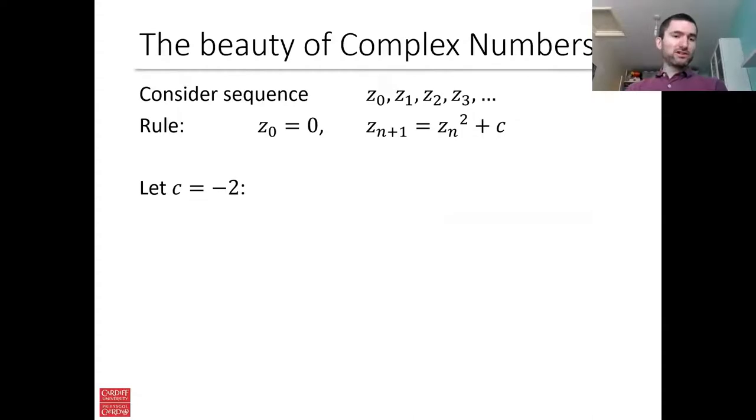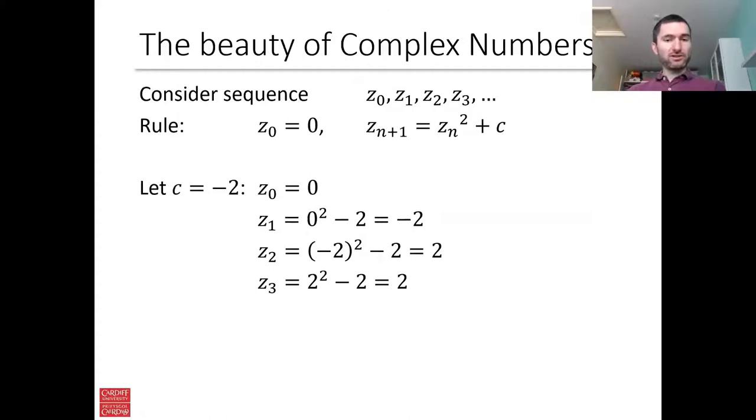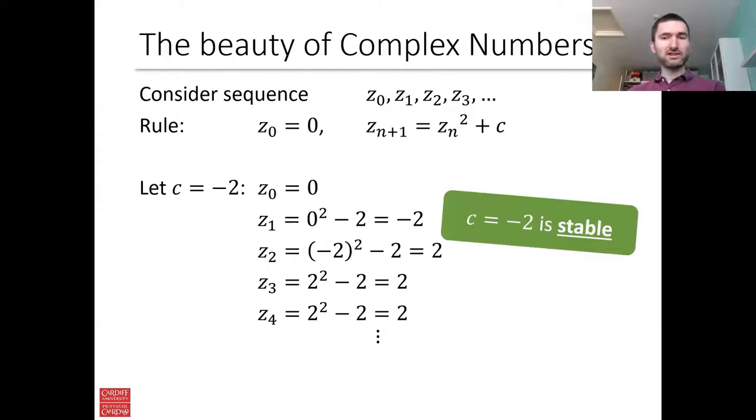We could consider for instance something like c is minus 2. So what happens then? Well again we start with z0 equals 0. Z1 is z0 squared plus c so 0 squared plus minus 2 we get minus 2. Z2 is minus 2 squared which is 4 minus 2 which is 2. Z3 is 2 squared minus 2 which is 2. Z4 is 2 squared minus 2 which is 2. And hopefully you can see what happens here. We're just going to keep getting 2, 2, 2 all the time.